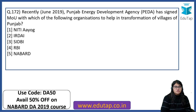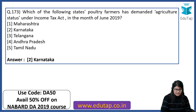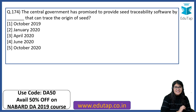Punjab Energy Development Agency signed an MOU with NABARD to help in transformation of villages of Punjab. Which state's poultry farmers demanded agriculture status under the Income Tax Act in June 2019? The answer is Karnataka. The central government promised to provide seed traceability software by June 2020 that can trace the origin of seed.